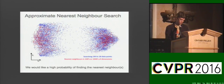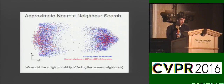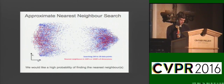Given a previously unseen query, Approximate Nearest Neighbour search will return the closest match from an index data set with high probability. Here a trade-off can be made between sacrificing a small amount of accuracy for a large gain in efficiency.